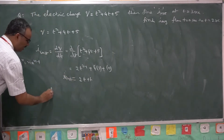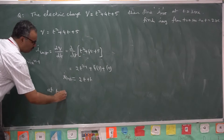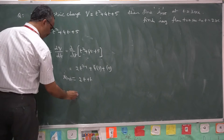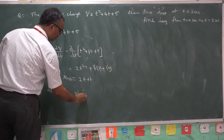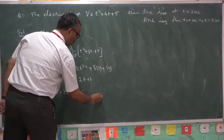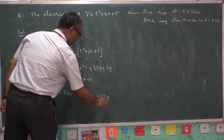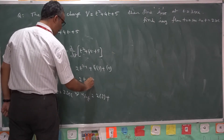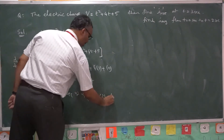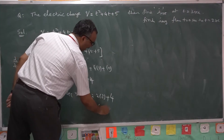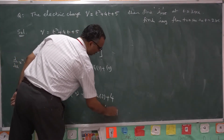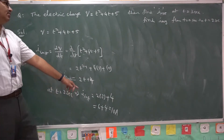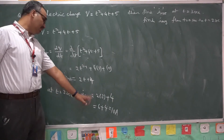You are asked to find instantaneous current at t = 3 seconds. When you substitute t = 3, the instantaneous current is 2×3 + 4 = 6 + 4 = 10 amperes. At time t = 3, the current passing through the conductor is 10 amperes, which is the instantaneous current.